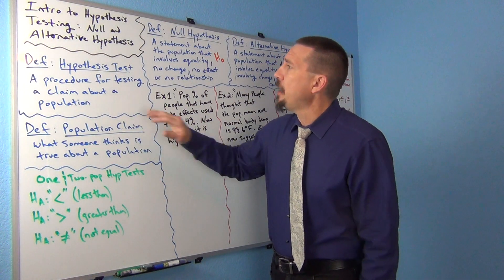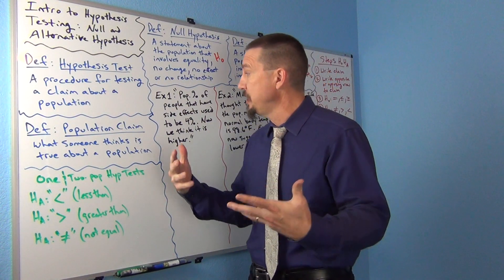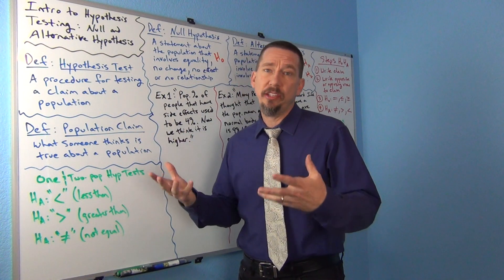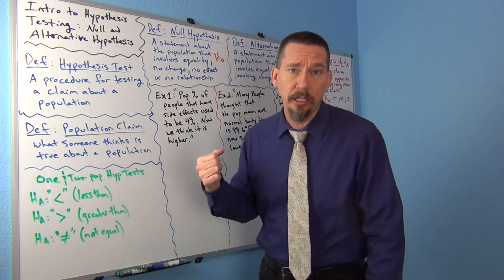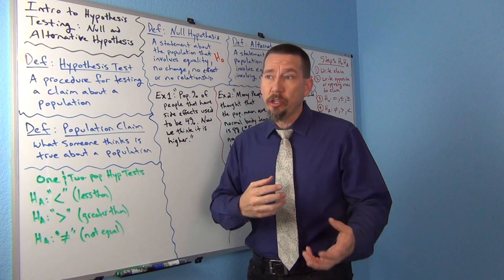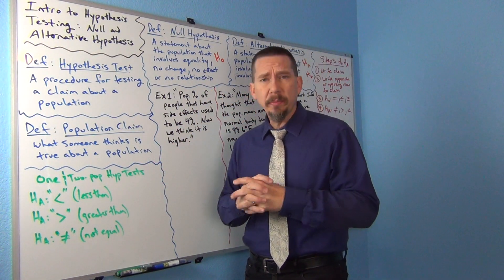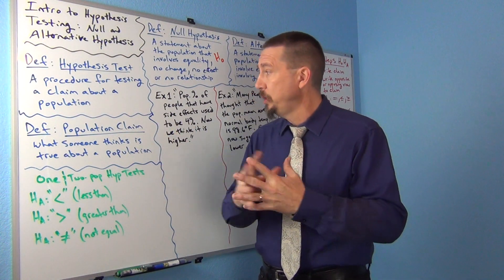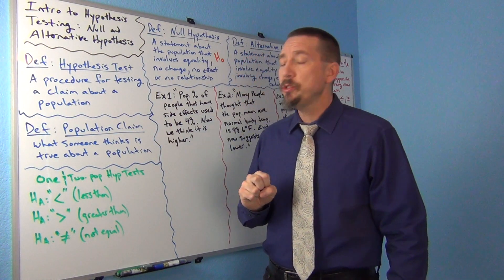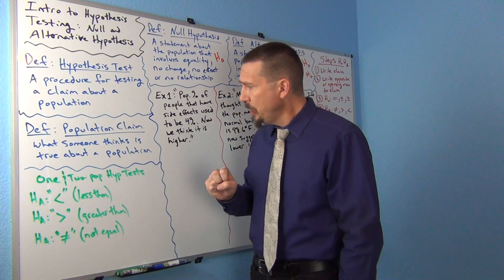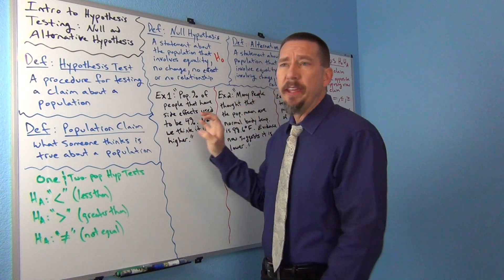When you're talking about a hypothesis test, one of the first things you want to identify is what's the claim — what did the person say about the population, or what do they think is true? So a population claim is what someone thinks is true about the population. Sometimes they'll give you an opposing view and sometimes they don't, but we basically want to identify what do they actually think is true. That's always the start: what's the claim?